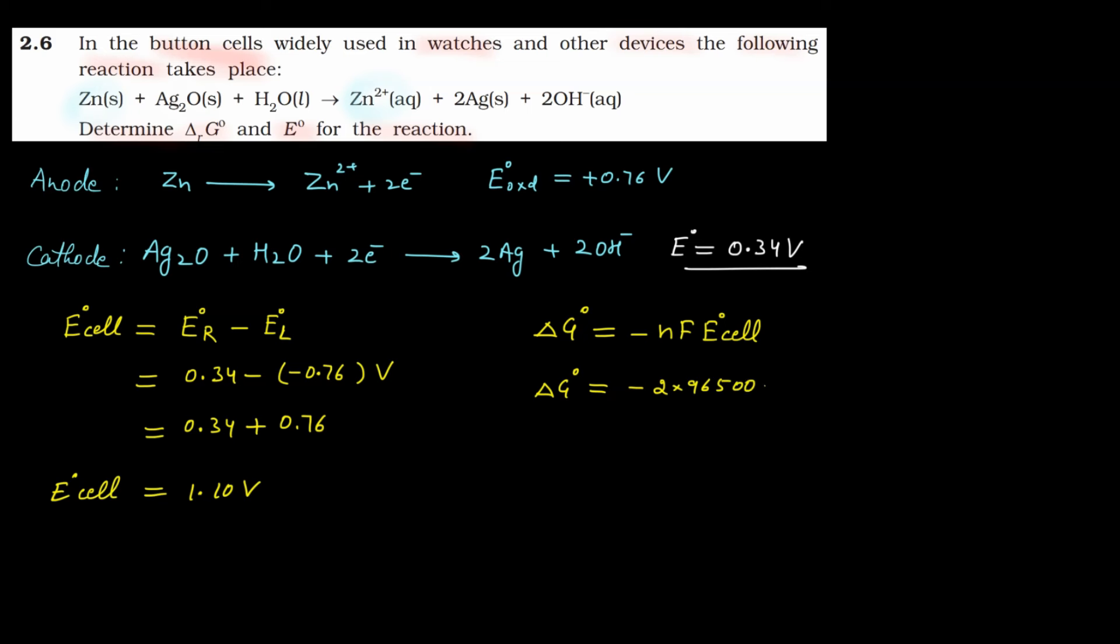Delta G° equals minus n is 2, F value is 96500, multiply these into 1.10 which is the value of E° cell. Just multiply and the answer will come. It will be minus 2.123 into 10⁵ joule per mole.